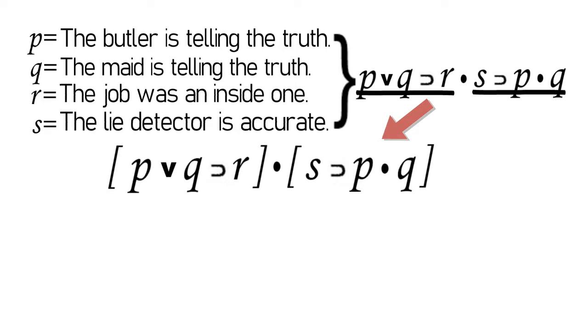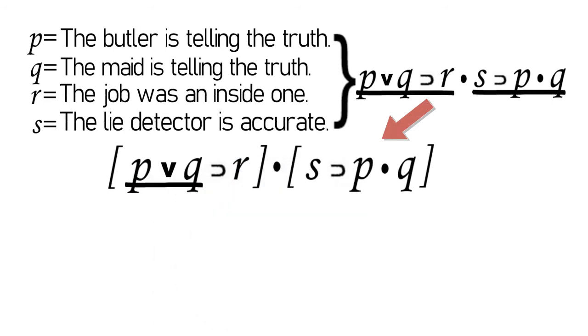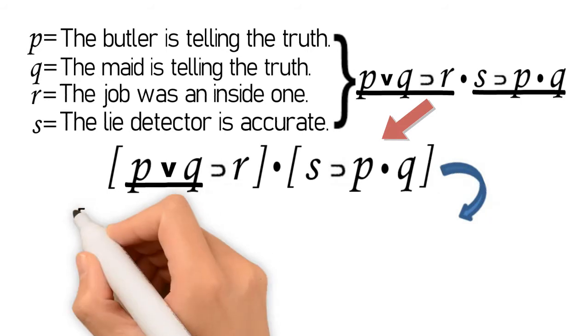Since it is stated in the first conjunct that the proposition is a conditional proposition whose antecedent is an inclusive disjunction, then we have to punctuate P or Q. Thus, we initially come up with the following symbol.